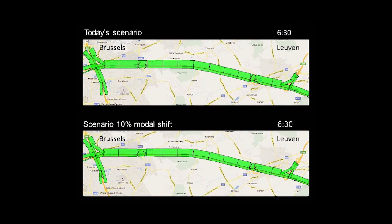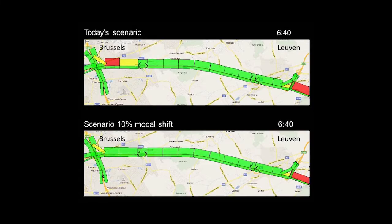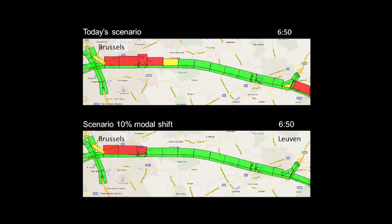This is the modal shift situation where we replace 10% of the cars — we really take them out of the traffic and we replace them by PTW riders. You can go through the slides like a movie. You see blocks appear: the thicker the blocks, the more vehicles there are. Yellow is fluent traffic, and the red lines are traffic at a standstill. You can clearly see the buildup of the traffic jam with every slice of 10 minutes.